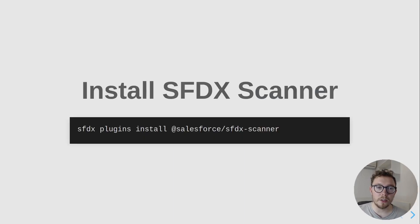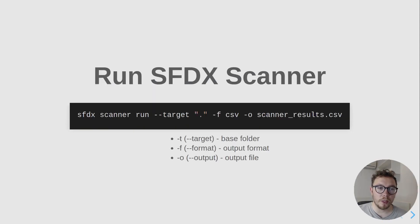To install SFDX Scanner, just run the install command inside your terminal. We can do a plugins install and get the latest version this way. In terms of running this, we want to ensure that we're in our project directory. Once you're at the base of the project directory, you can run it using SFDX Scanner run.